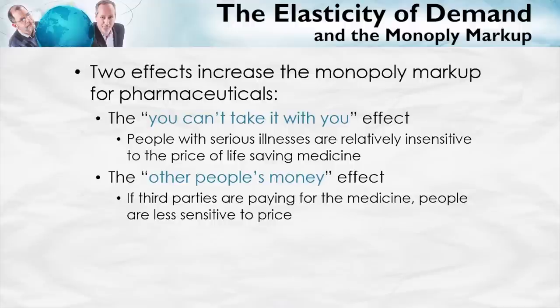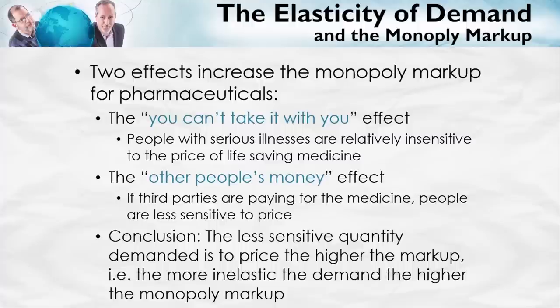Another effect: the other people's money effect. If somebody else is paying for the medicine, the consumer is going to be less sensitive to the price. For pharmaceuticals, often the insurance company, Medicaid, Medicare, or a government program is paying, so the person demanding the pharmaceutical isn't paying the price. Even when the price goes up, they're still going to ask for it — the quantity demanded isn't going to go down very much. So the conclusion is that the less sensitive quantity demanded is to price, the higher the markup is going to be. The monopolist will say: I can jack up the price and still sell almost as much as before. In other words, the more inelastic the demand curve, the higher the markup. That's our basic lesson.